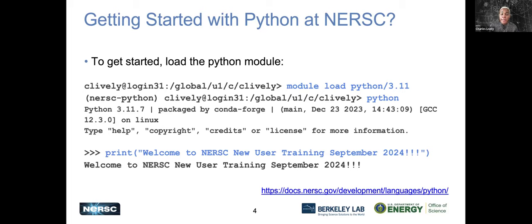We do these basically based off of our modules that are available. By default, when you log into Perlmutter, Python will load and our default version is now 3.11. Once you enter 'module load Python' and run the Python command, it'll give you all the details about the current version. This is just a simple command showing you how to execute it on Perlmutter in a terminal or in a Jupyter notebook.